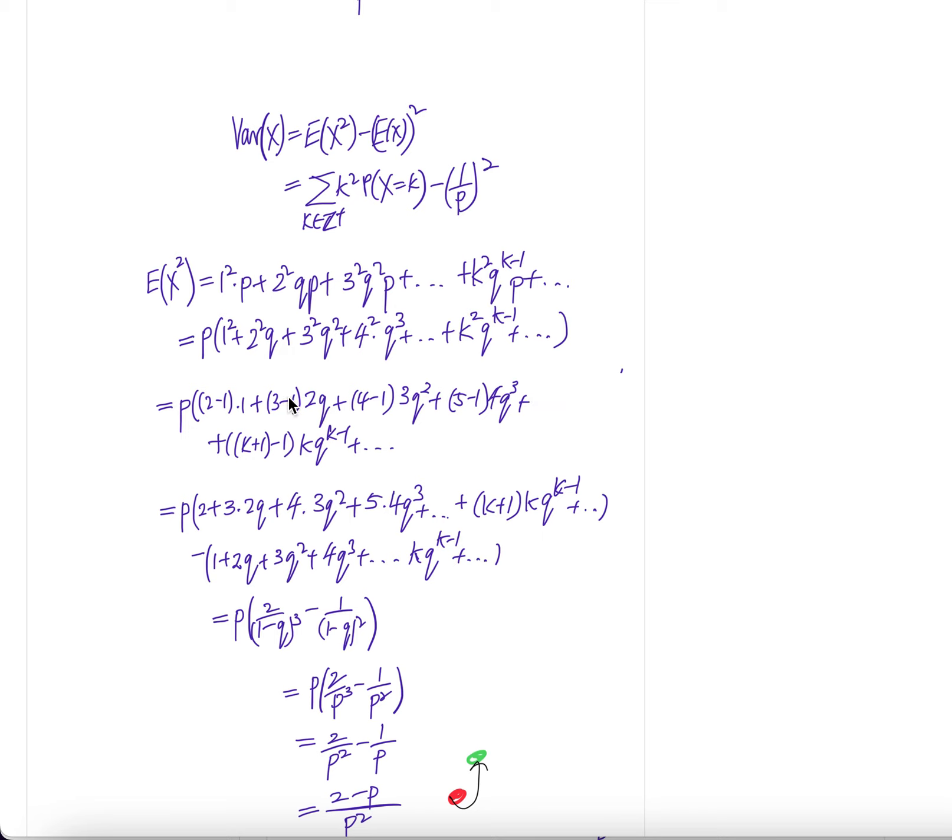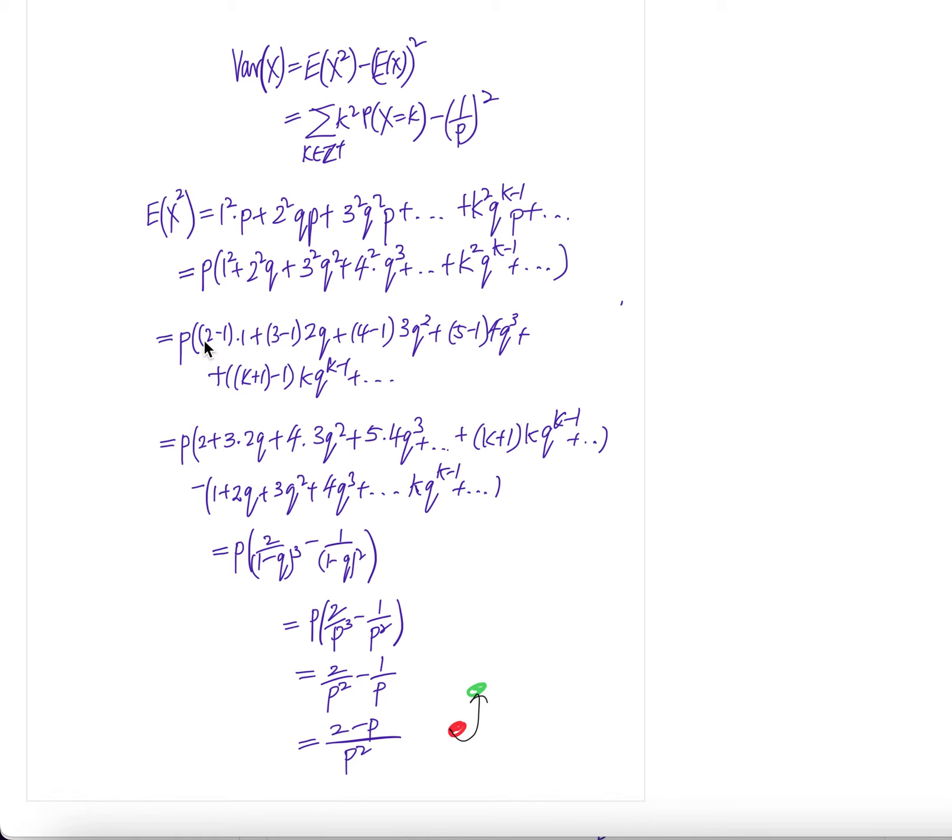Notice that 3 minus 1 is 2, 2 times 2 is 2 square, 4 minus 1 is 3, times 3 is 3 square, 5 minus 1 is 4 times 4 is 4 square. Now, you can write this and pull out the common terms.